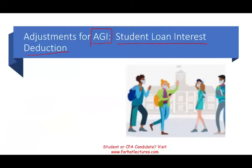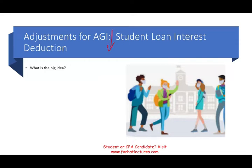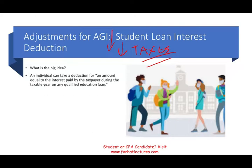So what is the big idea for student loan interest deduction? Simply put, when you attend school, oftentimes in the U.S. people borrow money. When you borrow money, you're going to be incurring interest. The interest that you incurred on your student loan might be deducted, meaning it's going to reduce your adjusted gross income, which means it's going to reduce your taxes and save you some money. The government will give you some deduction to help you pay for your school.